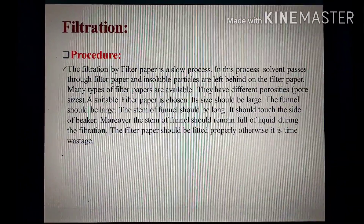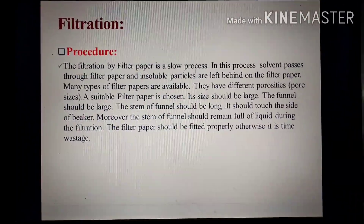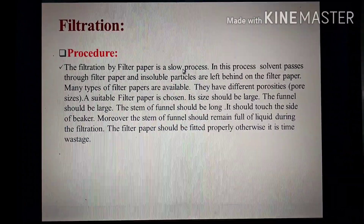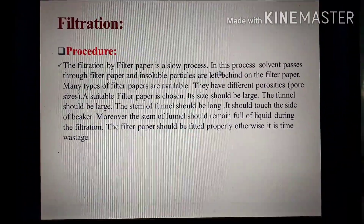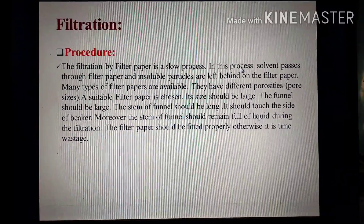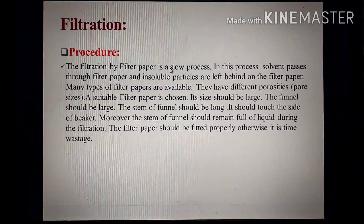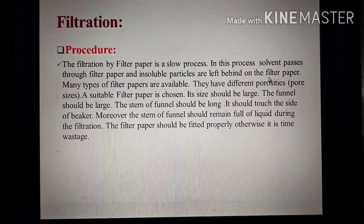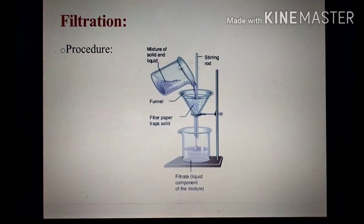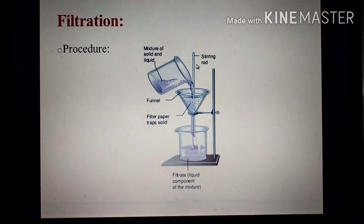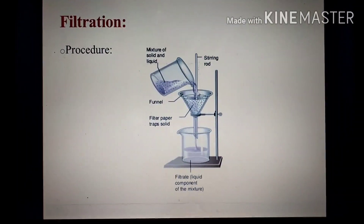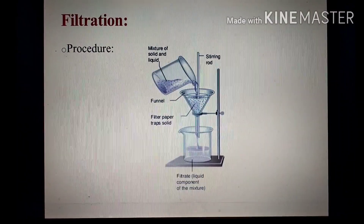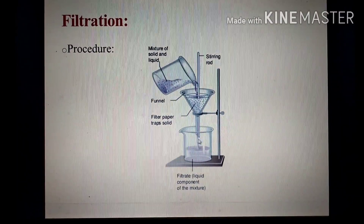Filtration by filter paper is a slow process ہے کیونکہ یہ single layer پر مشتمل ہے۔ اس process میں solvent filter paper سے pass کرتا ہے اور insoluble particles left behind رہ جاتے ہیں آن the filter paper۔ Sample پہ stirring rod کی مدد سے shake کرتے ہیں اور insoluble particles left behind رہ جاتے ہیں جبکہ liquid نیچے beaker میں filtrate کے طور پر آ جاتا ہے۔